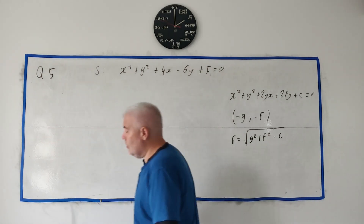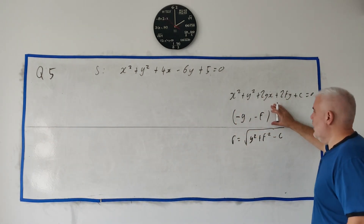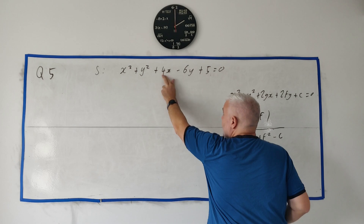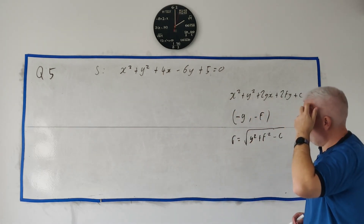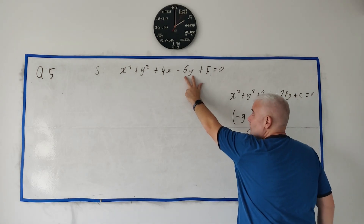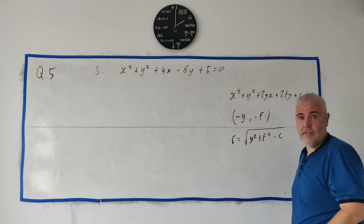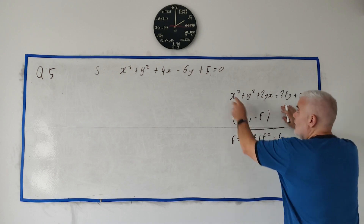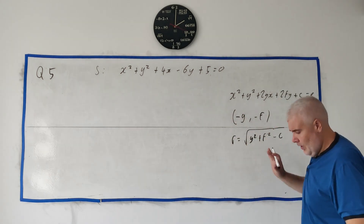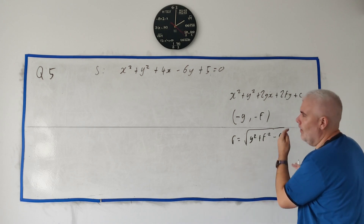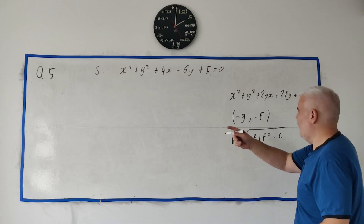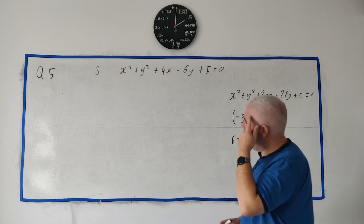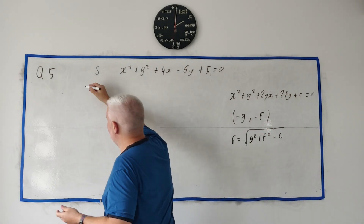From that you should be able to just write down the centre, because the centre is half of whatever's in front of x and y with a minus sign. So minus half of 4 gives minus 2, and minus half of minus 6 gives plus 3 — so the centre is (−2, 3). c is just 5, and it should be quite straightforward to get the radius. I'm going to do it the longer way because I think it's worthwhile and people are more comfortable with the circle equation in the form (x − h)² + (y − k)² = r².